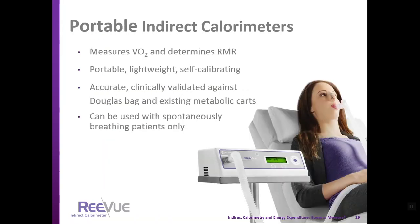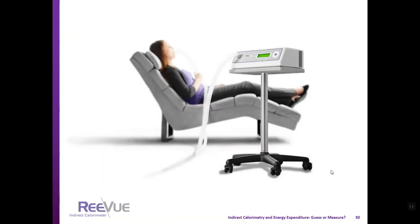There are portable indirect calorimeters that measure oxygen consumption to determine resting metabolic rate. One example is the MedGem/Reevue device, which is portable, lightweight, and self-calibrating. It has been clinically validated against Douglas Bag and existing metabolic carts, and is used with spontaneously breathing patients only. Patients use nose clips and a mouthpiece during measurement, and are typically in a supine position.